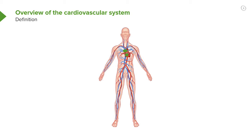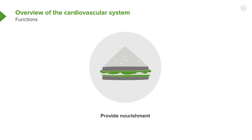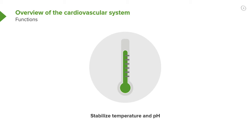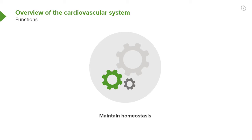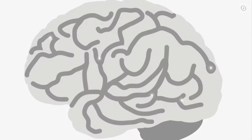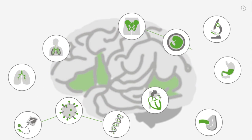In terms of function, the cardiovascular system provides nourishment — it carries various nourishing substances to the cells. It helps in fighting disease in that it transports molecules that fight bacteria and viruses, and also cells that do the same thing. It stabilizes the temperature and the pH within the body, so that you have the same temperature and pH on the tips of your fingers as on the tips of your toes. And it helps to maintain homeostasis, that is, stability of the internal environment.